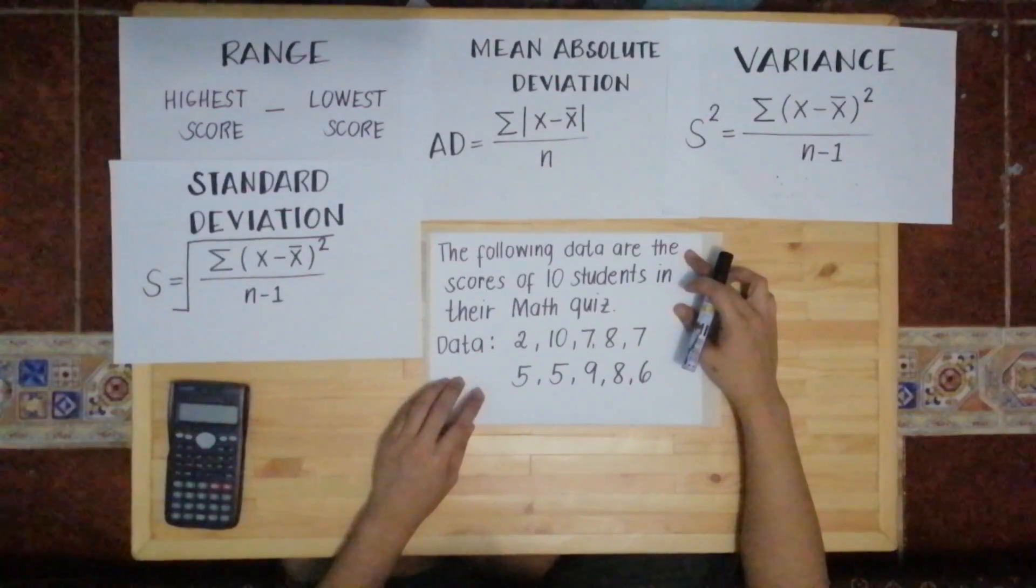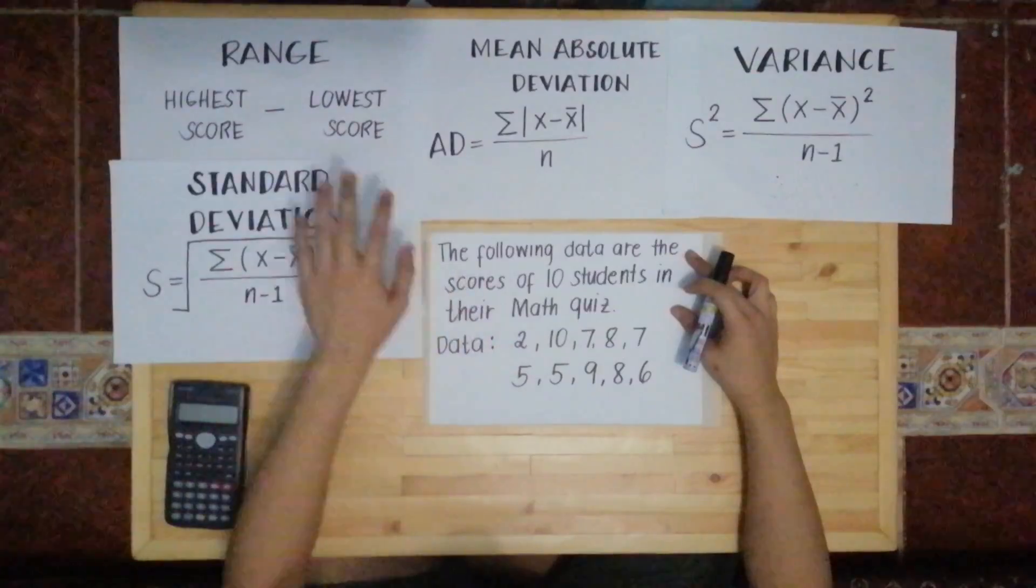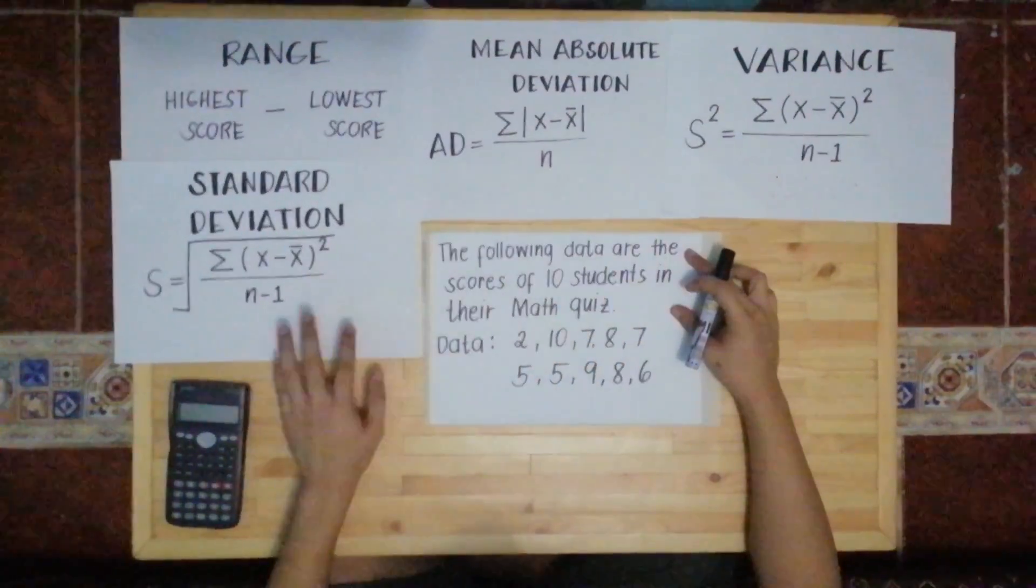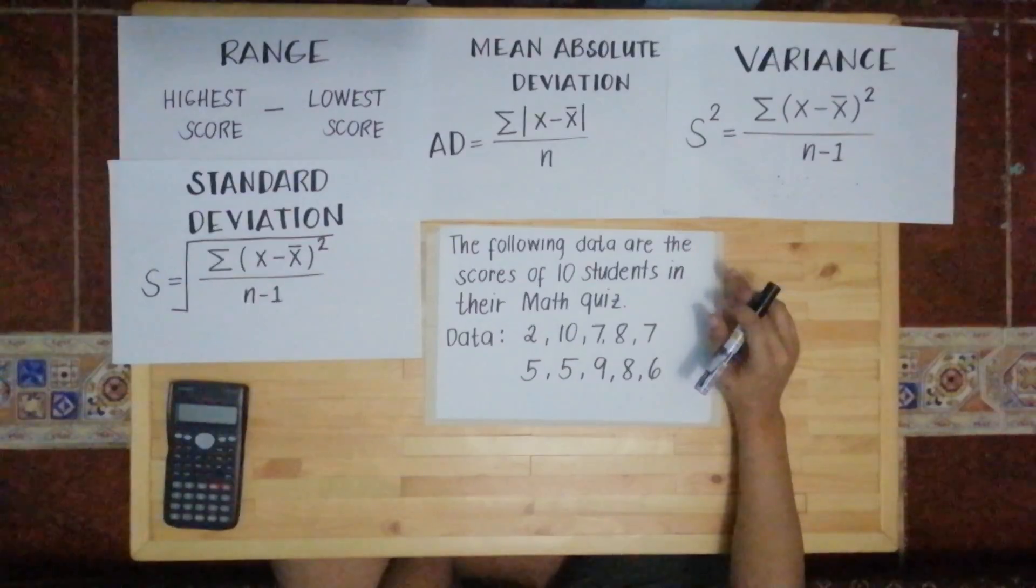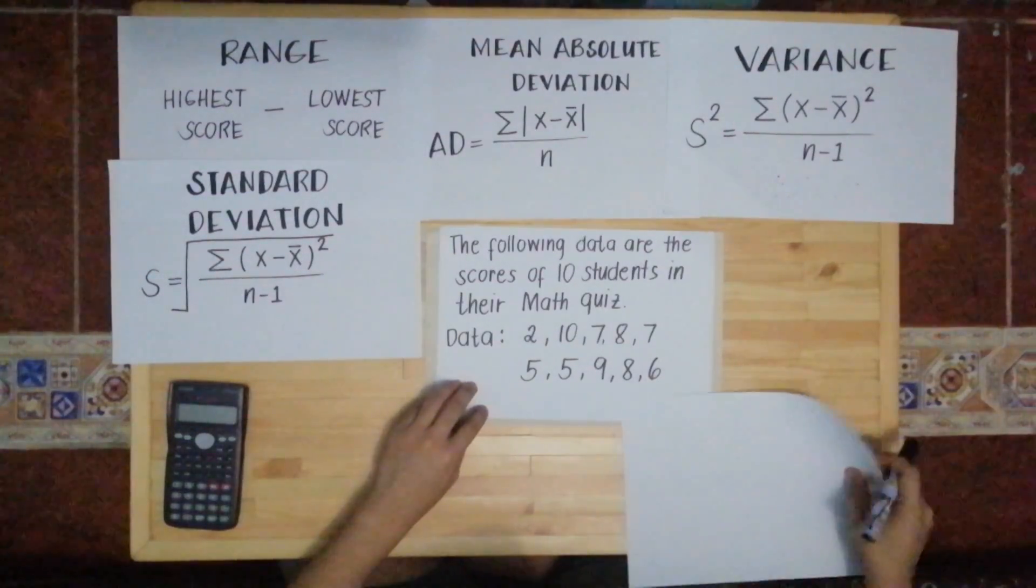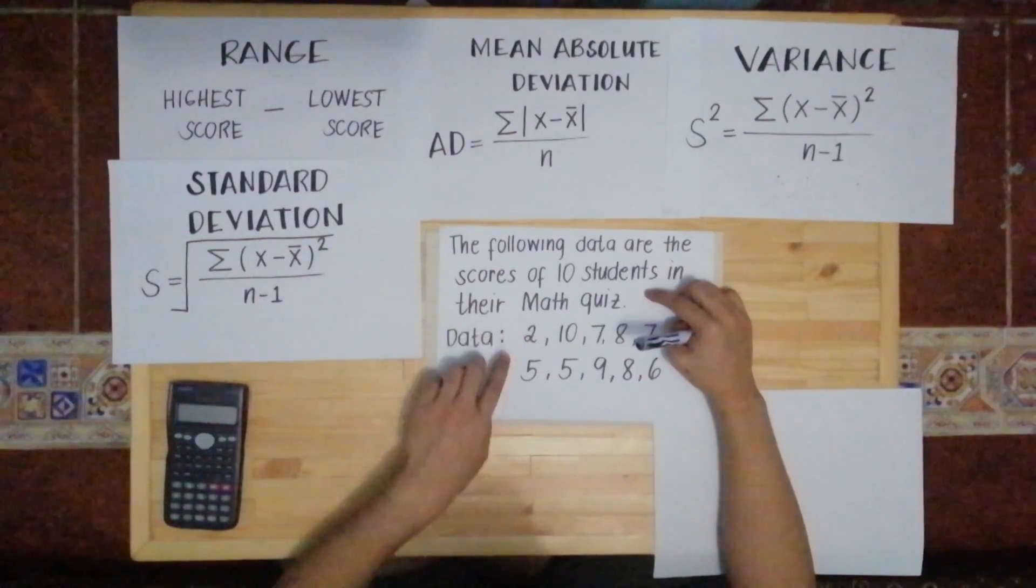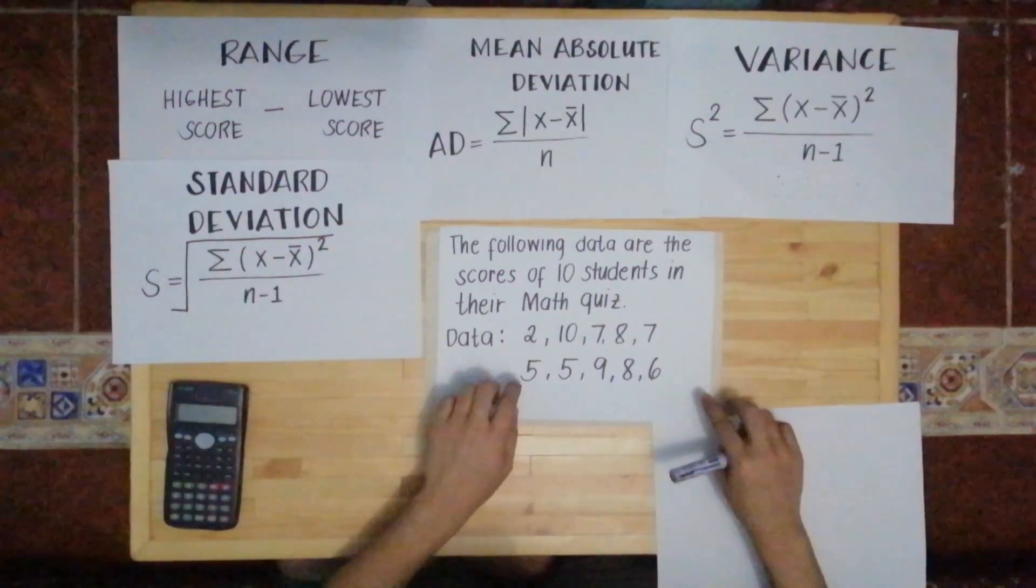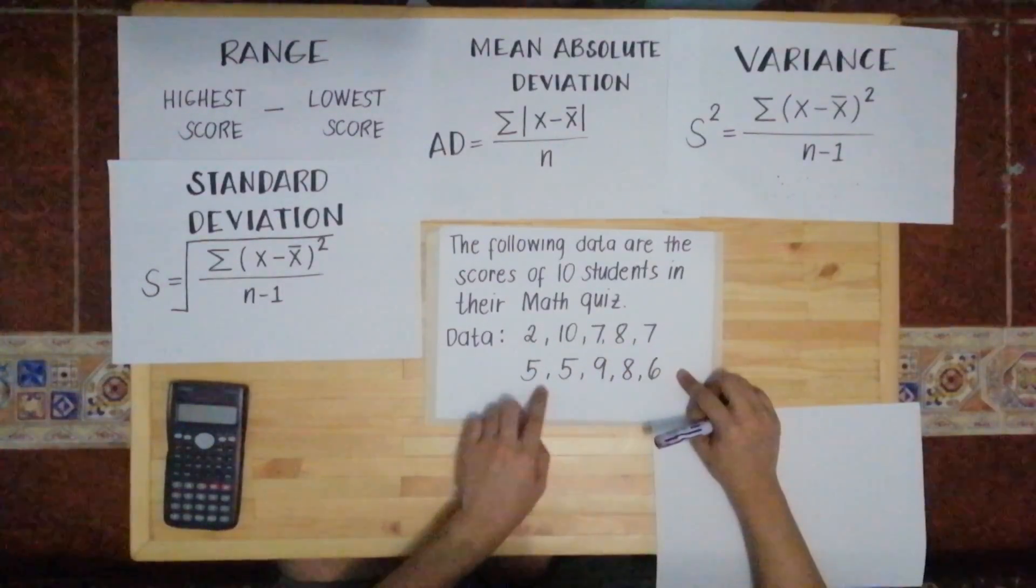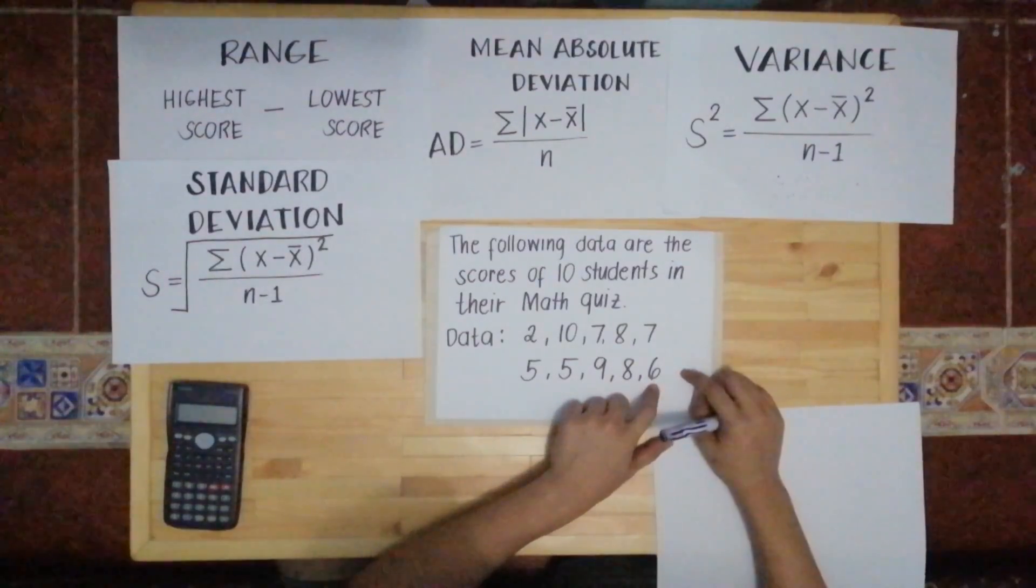The following data are the scores of 10 students in their math quiz. So we need to find the range, mean absolute deviation, the variance, and the standard deviation. So let's solve this problem. There are 10 students who took an exam in their math, and they got scores: 2, 10, 7, 8, 7, 5, 5, 9, 8, and 6.